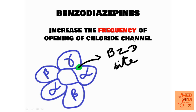Benzodiazepines, on the other hand, increase the FREQUENCY of opening of the chloride ion channel. For example, if normally the chloride channel opens five times per minute, once benzodiazepine binds to its receptor, it opens about 20 to 30 times per minute. So it just increases the frequency — not the duration — of opening of the chloride ion channel.